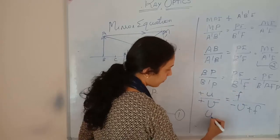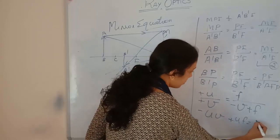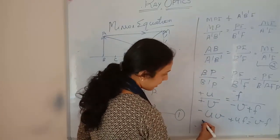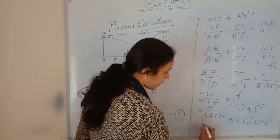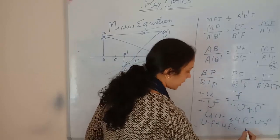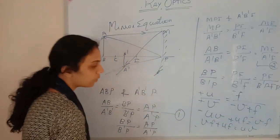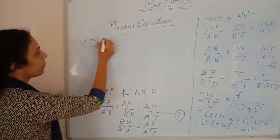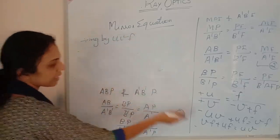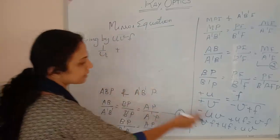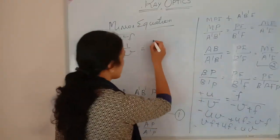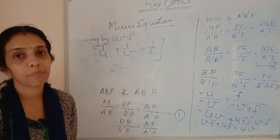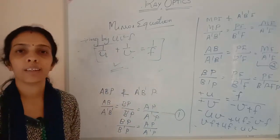Cross-multiplying gives: −uv + uf equals vf. Rearranging: vf + uf equals −uv plus terms. Now dividing everything by uvf, we get 1/u + 1/v equals 1/f. This is the mirror formula. So we have derived the mirror equation for a concave mirror.